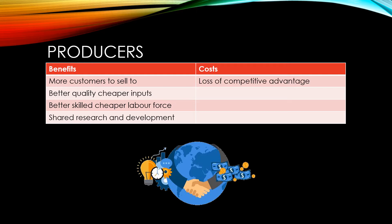While globalisation does mean that producers have more customers to sell to, it also means that they have more competition to face from overseas firms. In certain industries there will be a loss of competitive advantage and local firms will no longer be viable. Those producers that don't move to more productive new industries could find themselves going out of business. Producers that have grown in size are also vulnerable to drops in demand in foreign markets.